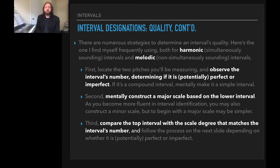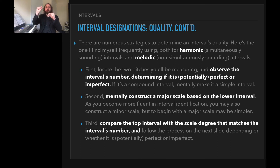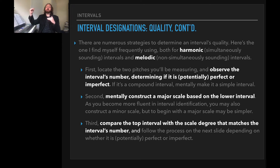Second, we will mentally construct a major scale based on the lower interval note. As you become more fluent in interval identification, you may also want to construct a minor scale, but to begin with a major scale might be simpler. Third, we're going to compare the top note of the interval with the scale degree that matches the interval's number and follow the process depending on whether it is potentially perfect or imperfect. So if it's a fifth, you'll compare it against the fifth scale degree.